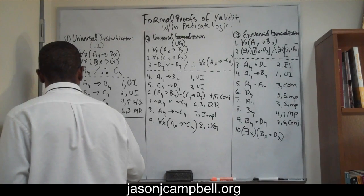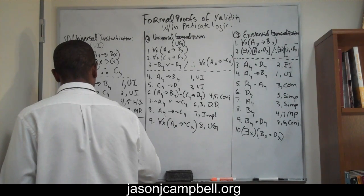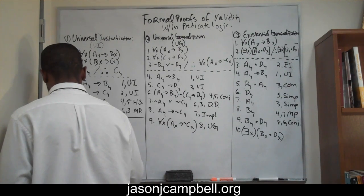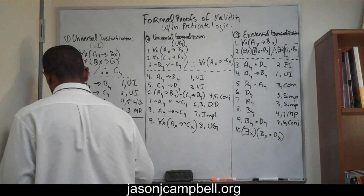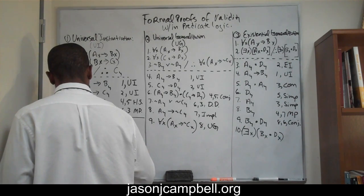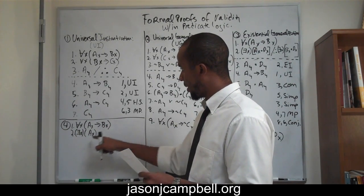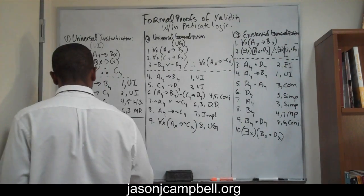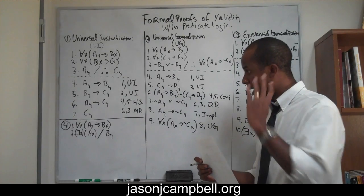Assume that we're given the following premises. We have for all x, if x is an a, then x is a b, that's line one, line two. So if x is an a, then x is a b, and there's at least one x such that that x is an a. And the conclusion we're trying to attain is b, y. That's the goal, right? We're trying to get to y is a b.